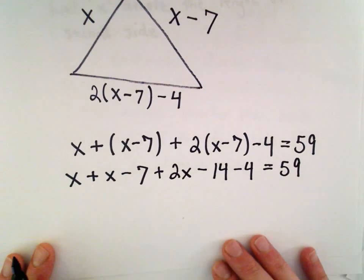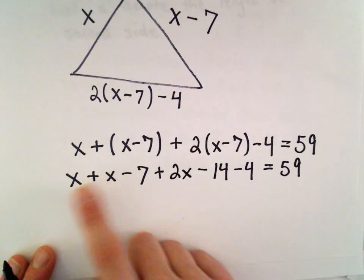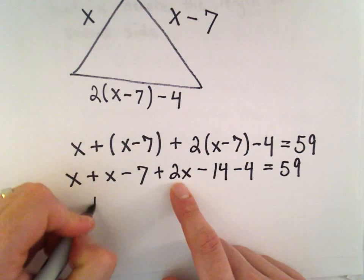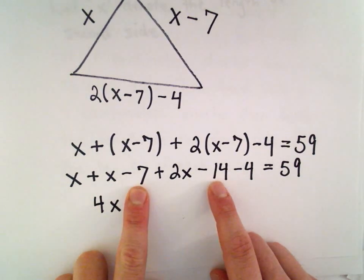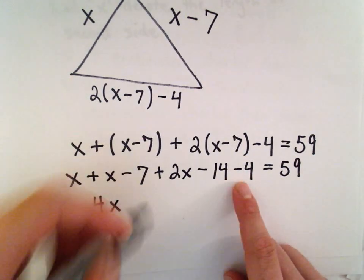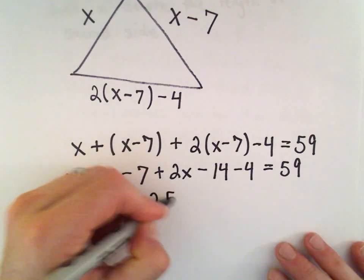I'm going to combine my like terms on the left side. So, we have 1x plus 1x plus 2x. That's 4x. Negative 7 minus 14 will be negative 21. Minus another 4 will be negative 25.